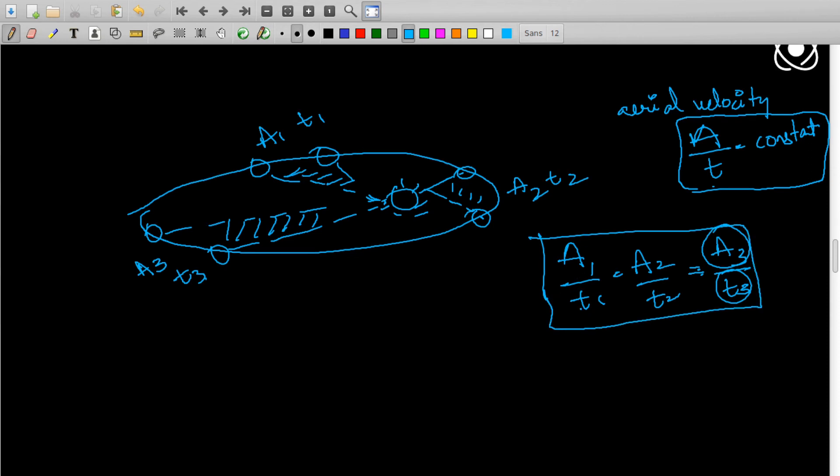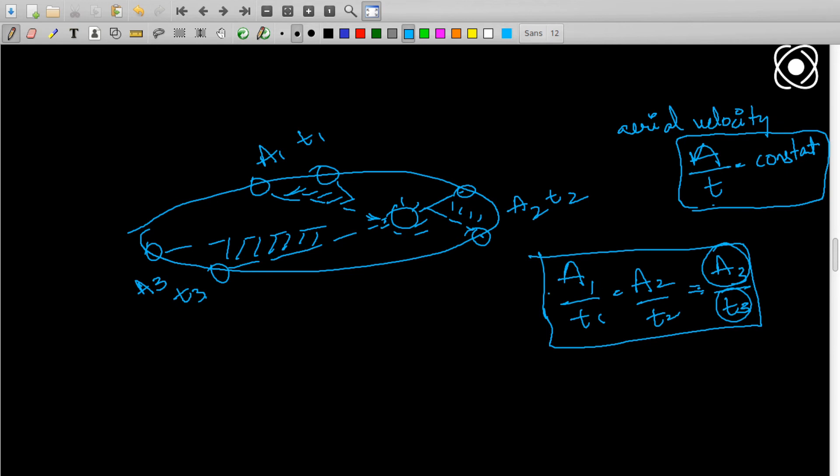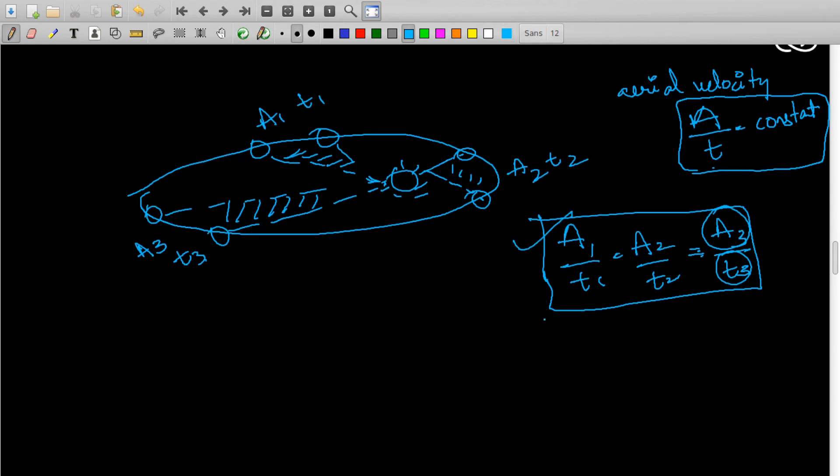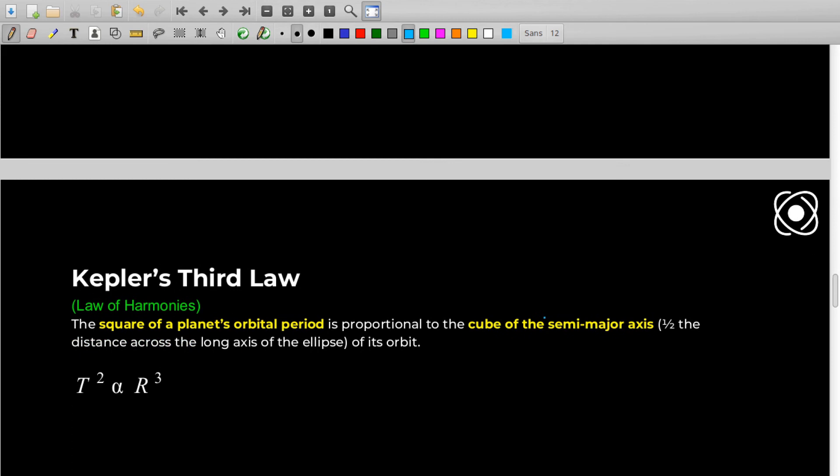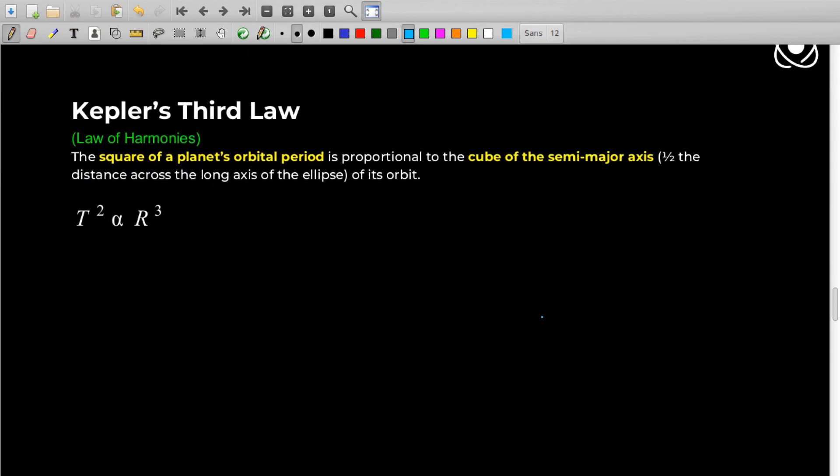So that can be a problem in this law. If someone gives you a problem based on this law, it must be this only 99% of the times. That was Kepler's second law. Let's move on to Kepler's third law, the most used and most interesting law. It is also called the law of harmonies.